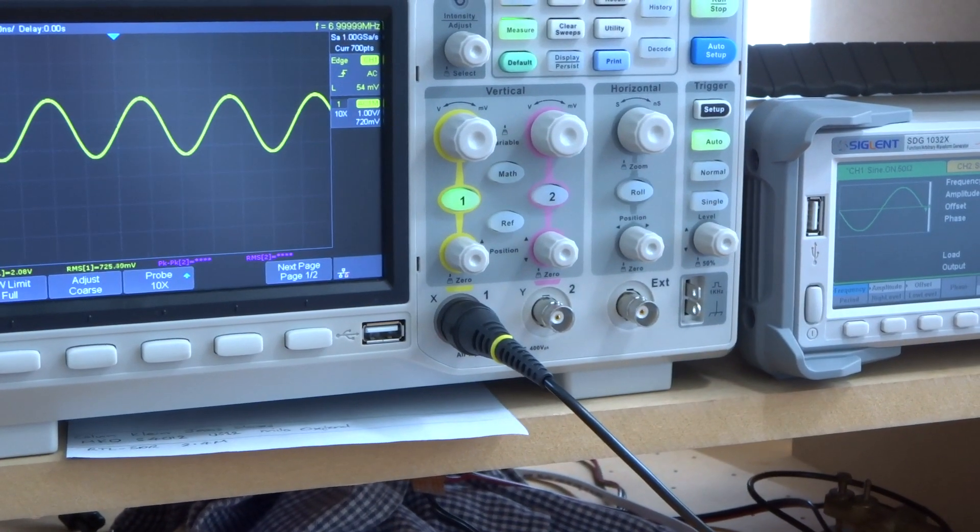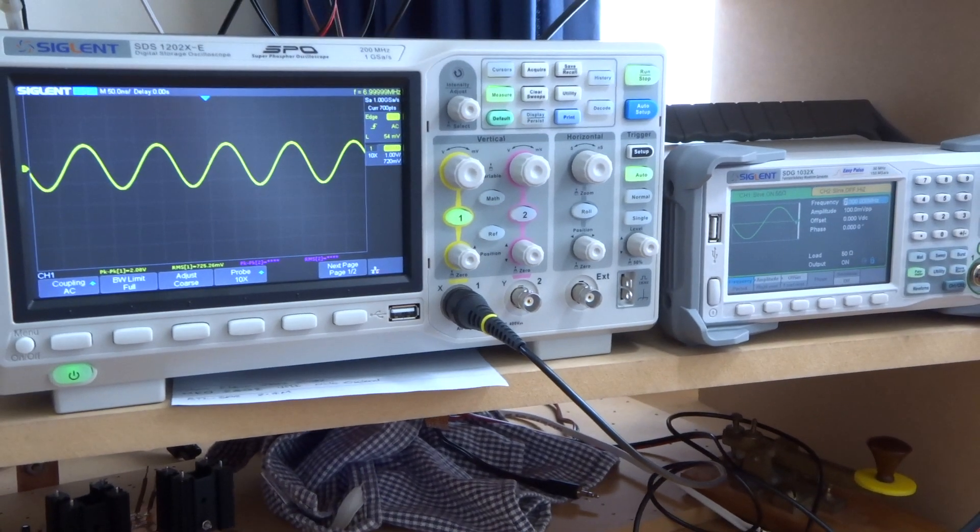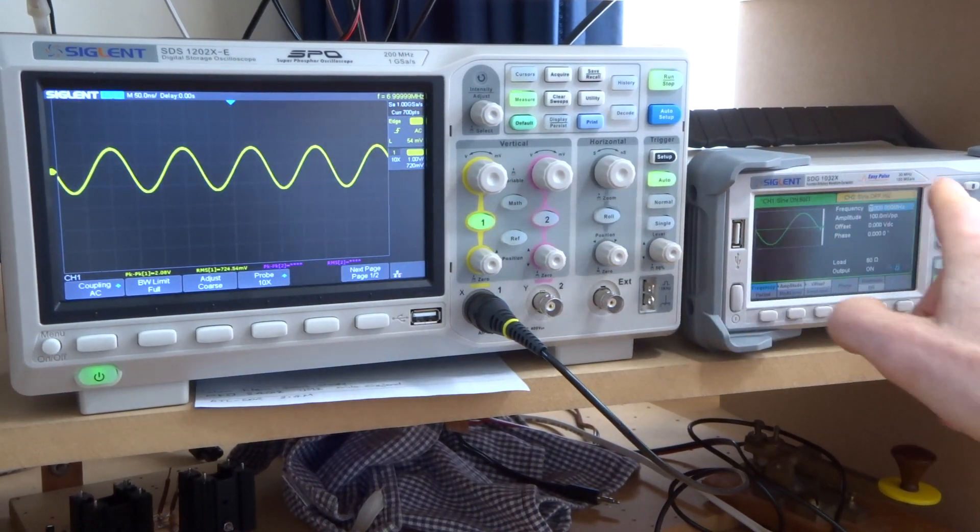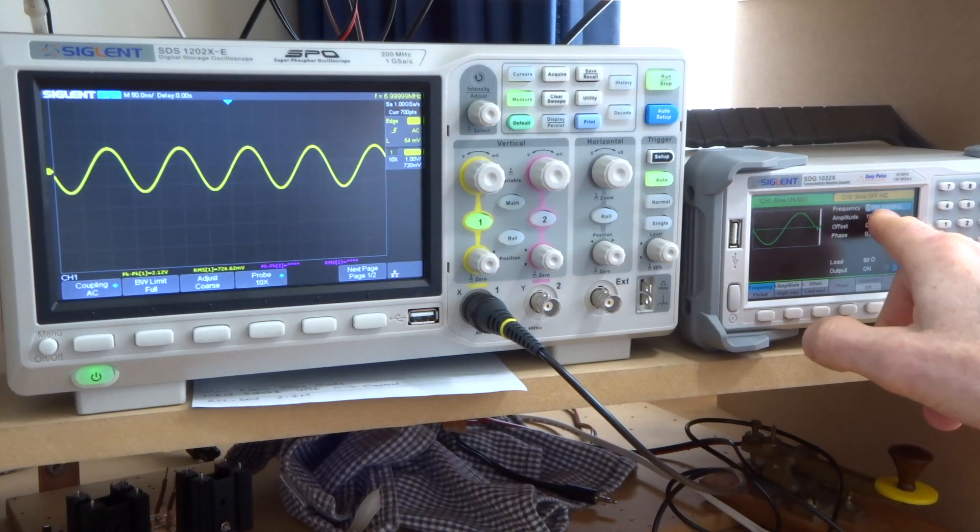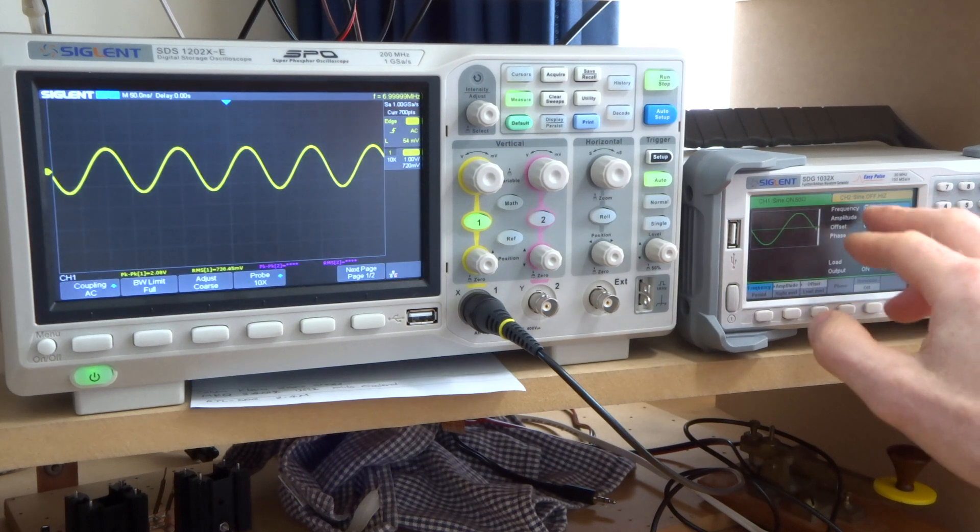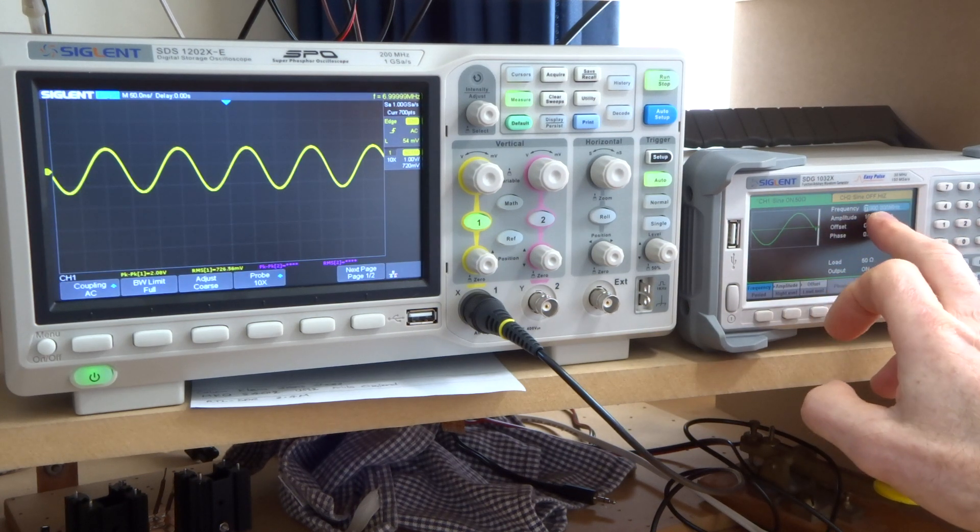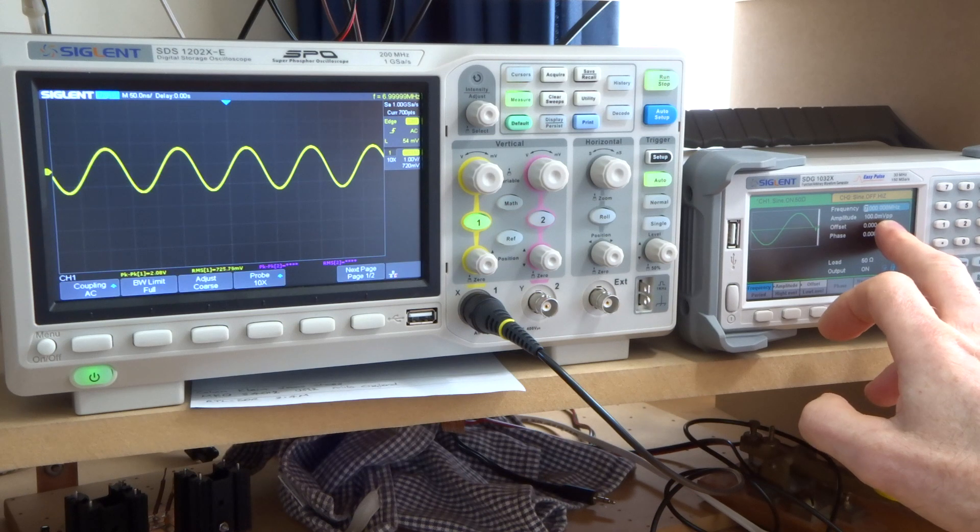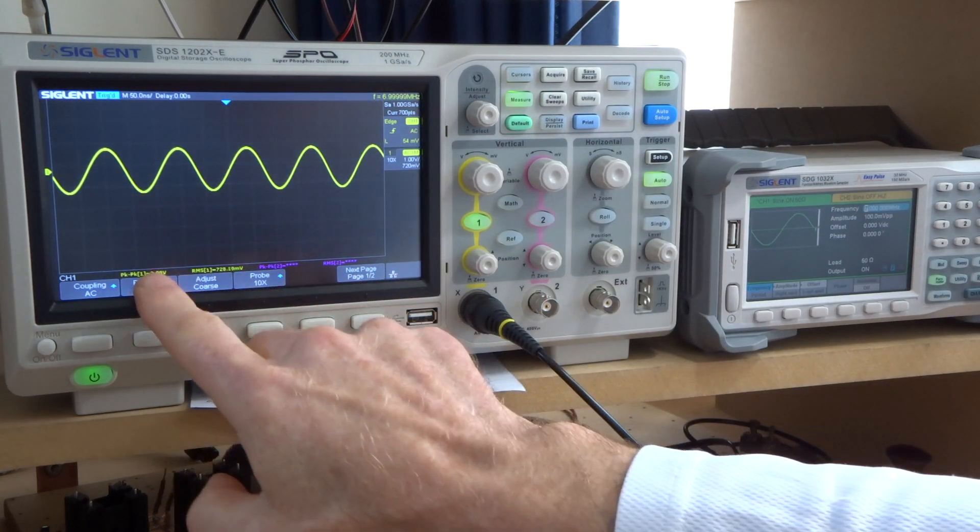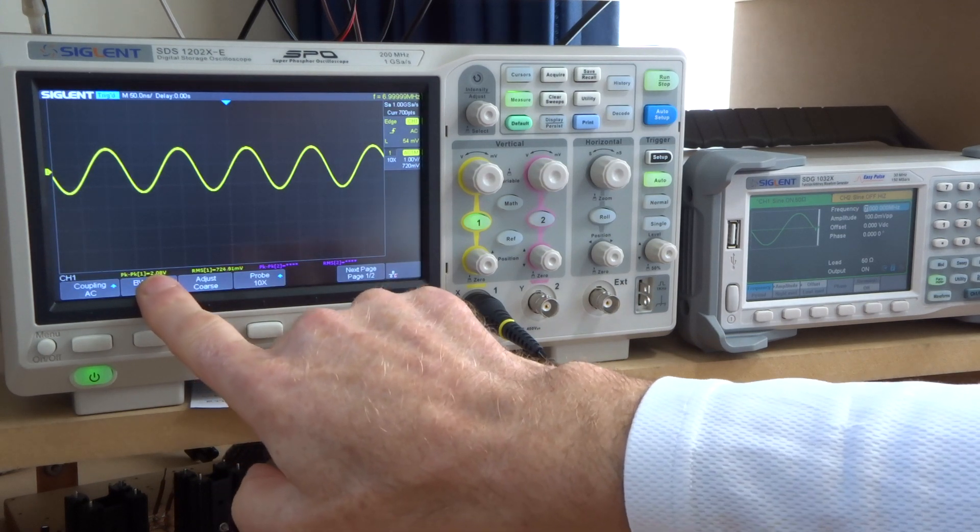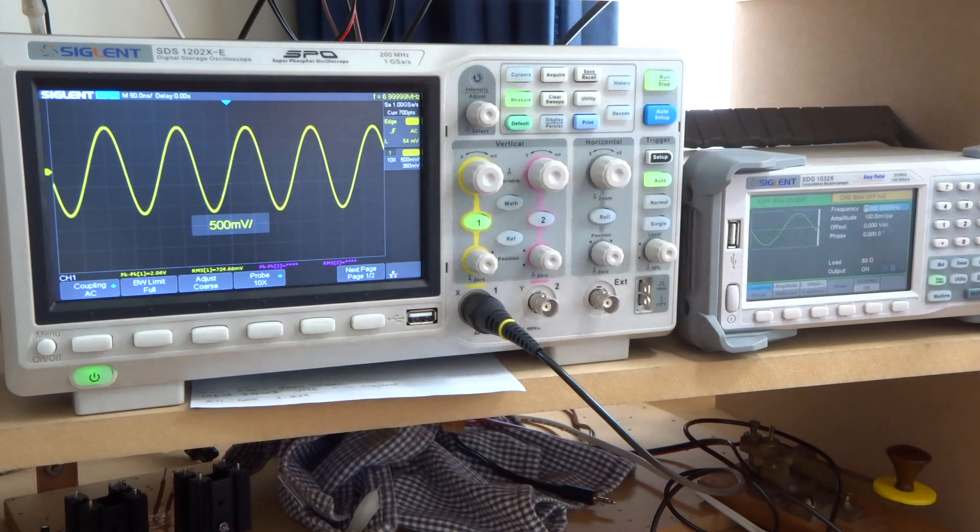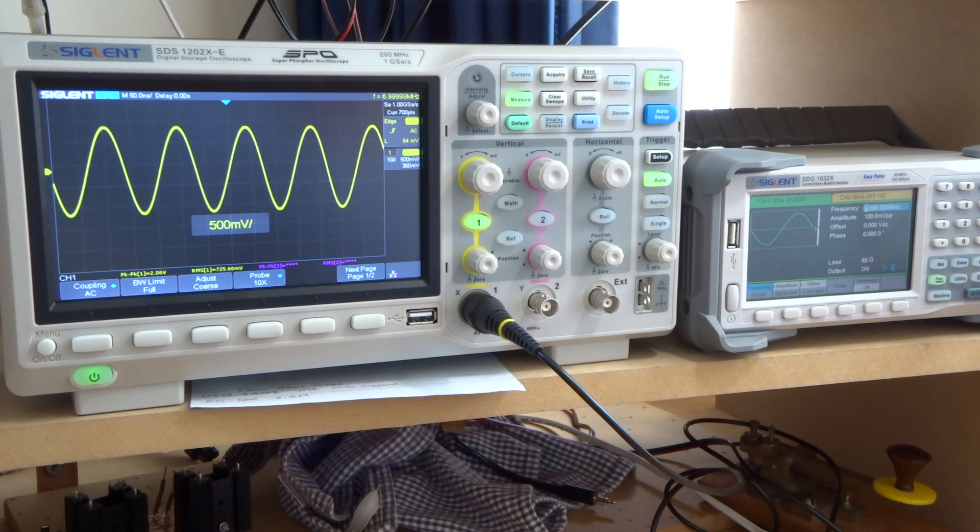Switching our attention to the oscilloscope. What I have there at the moment, frequency is set to 7 megahertz, amplitude is 100 millivolts peak to peak, and as we're seeing over here, we're getting as we saw in the simulation 2.08 volts peak to peak. So matching up very nicely with what we're seeing in the simulation.